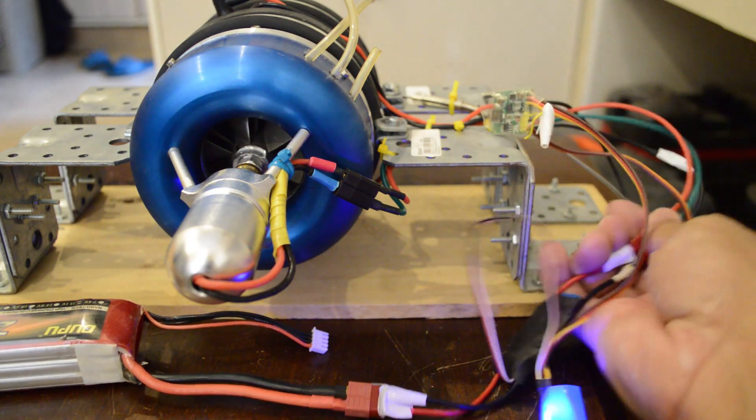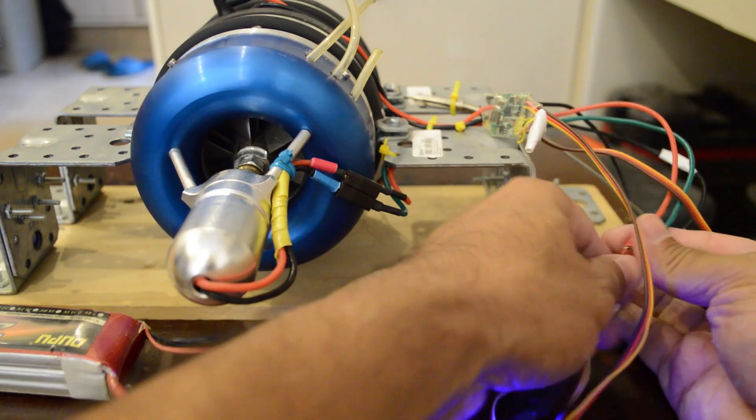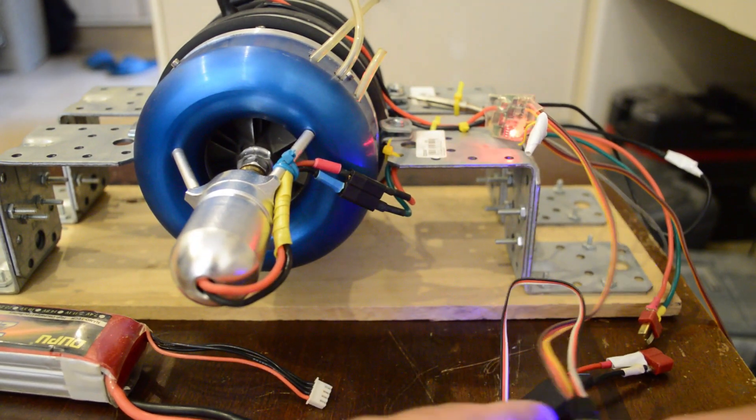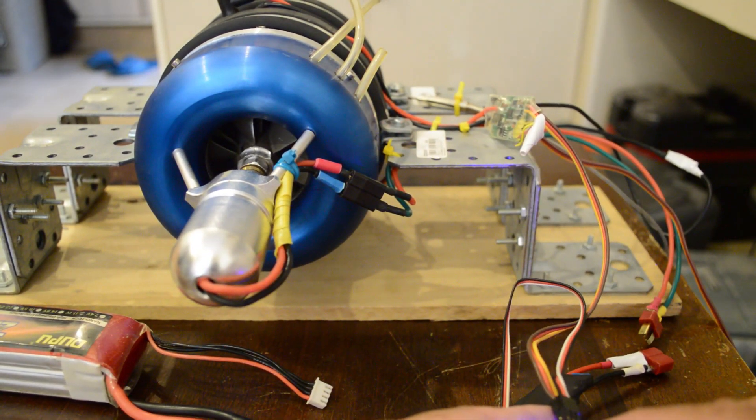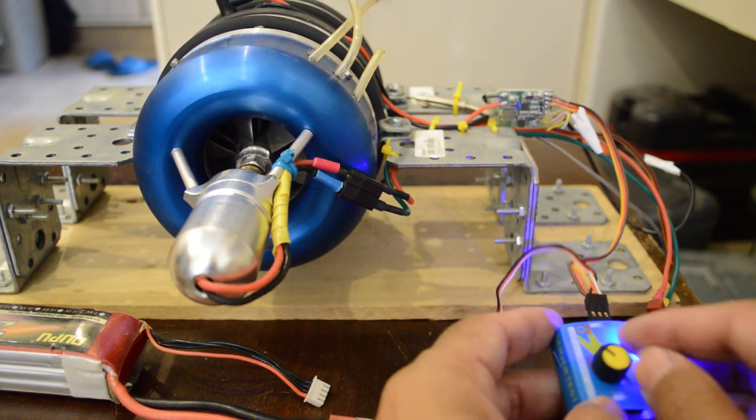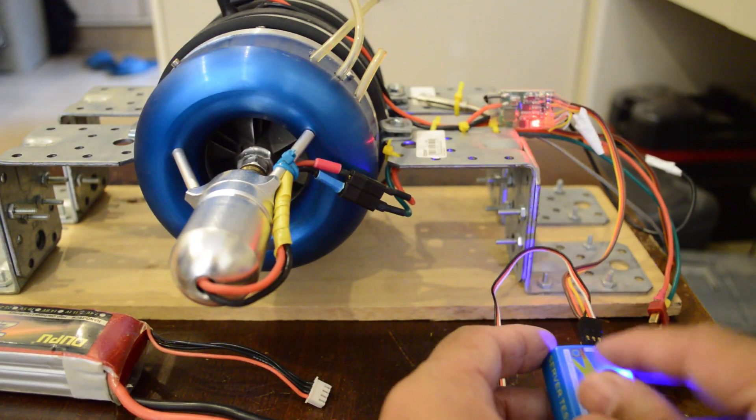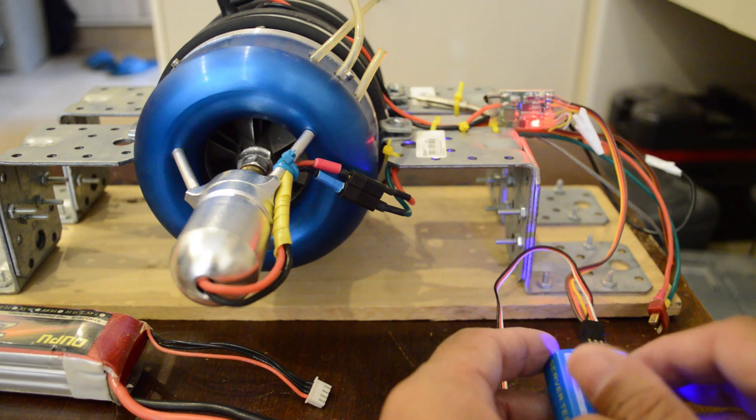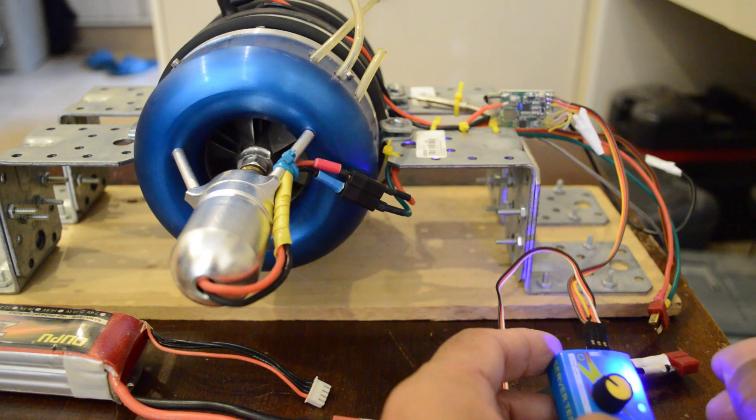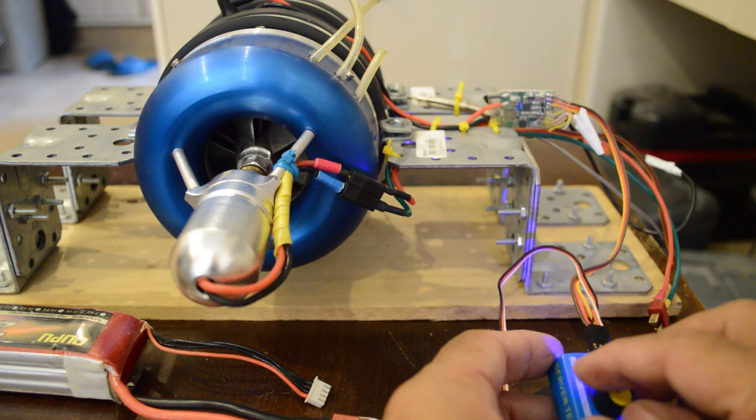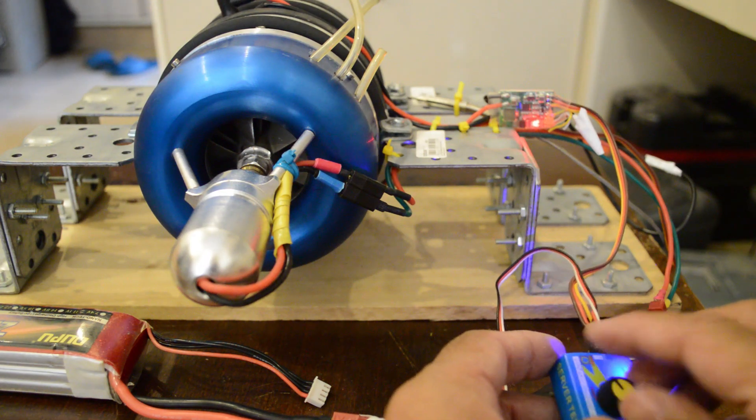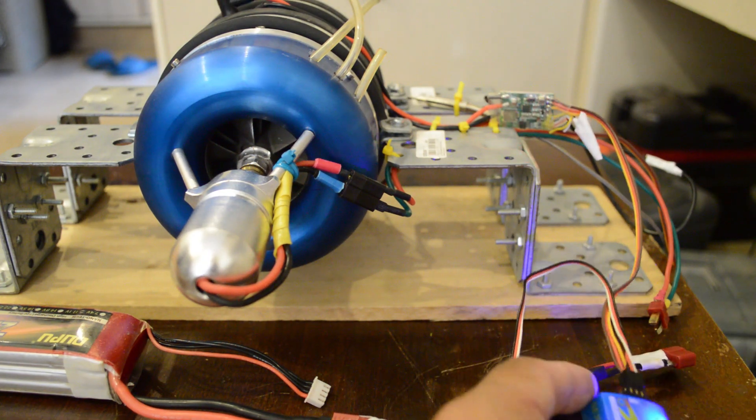We will disconnect the starter motor as we just want to test the glow plug control module. And as soon as the full servo signal is sent, the glow plug is powered up. When it is reduced, the glow plug is switched off. With this we can control the amount of power we deliver to the glow plug as well, so we can control the amount of heating.